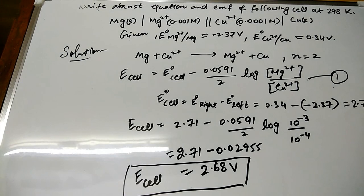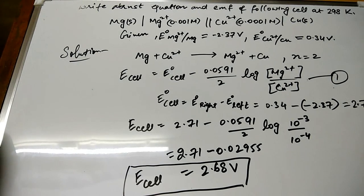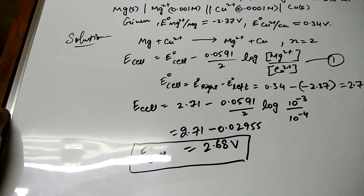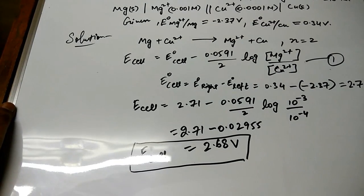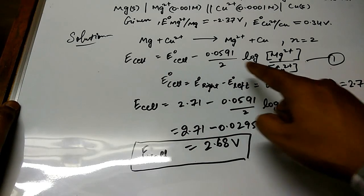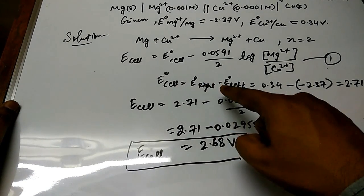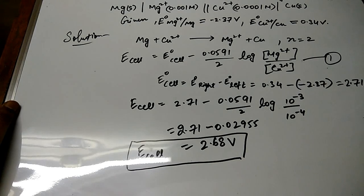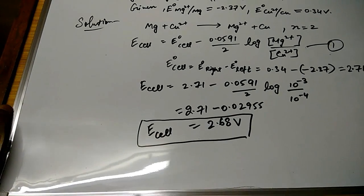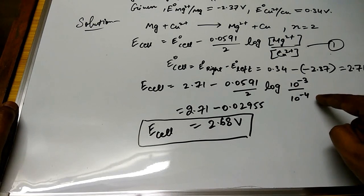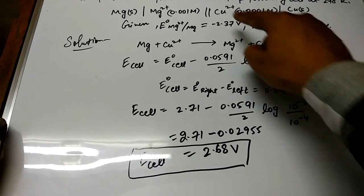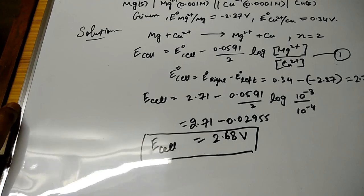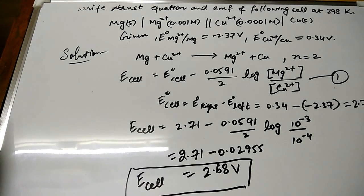Let me sum up once again this question for you. So we have to write the Nernst equation for the given cell and we have to first arrange this given cell reaction into the complete chemical reaction. From here we can easily calculate n = 2. Afterward you need to write the formula, make it equation 1. Find E°_cell separately like E°_right - E°_left will give you 2.71. Put this value in equation 1, you will get respective values like this. After log you have to take the values which are given in the basic question with the cell reactions. Solving this you will get E_cell.